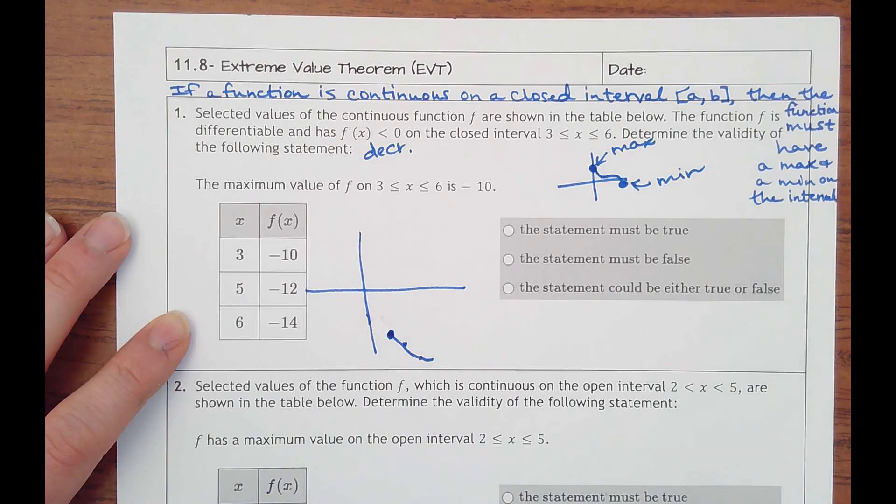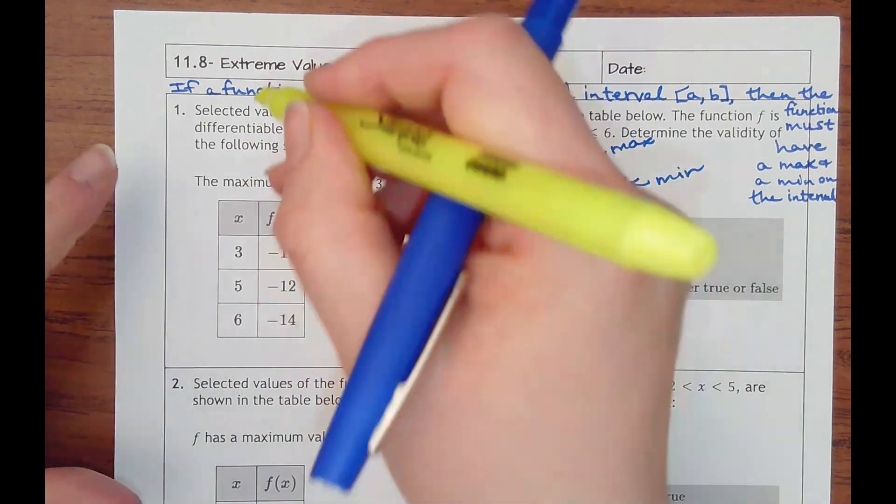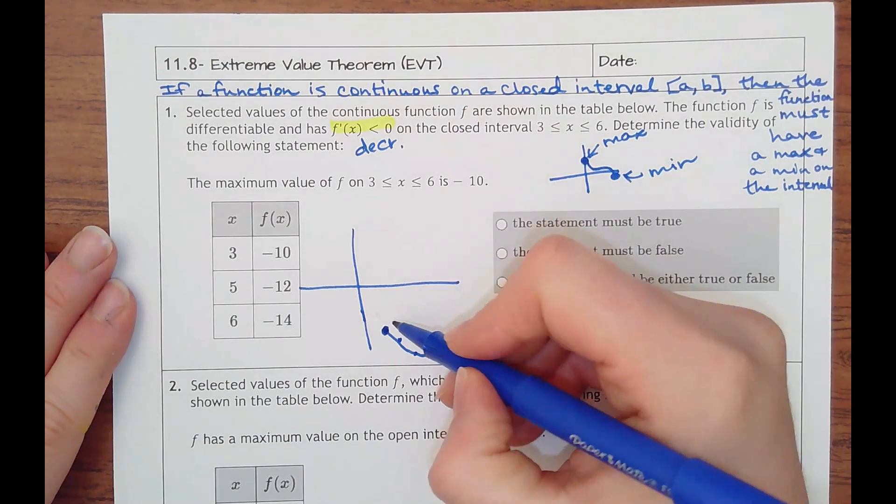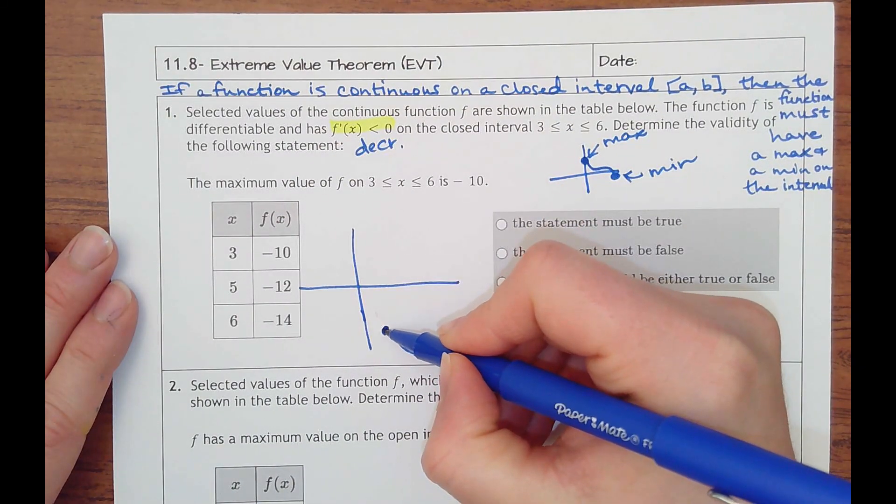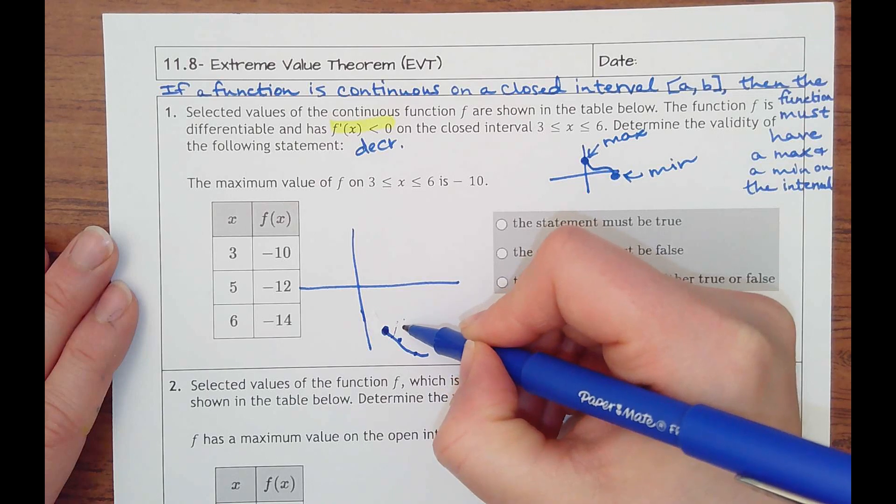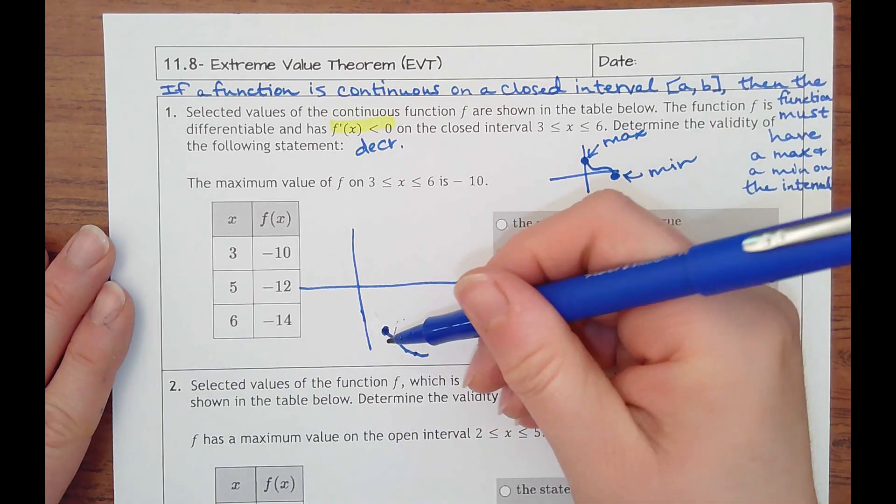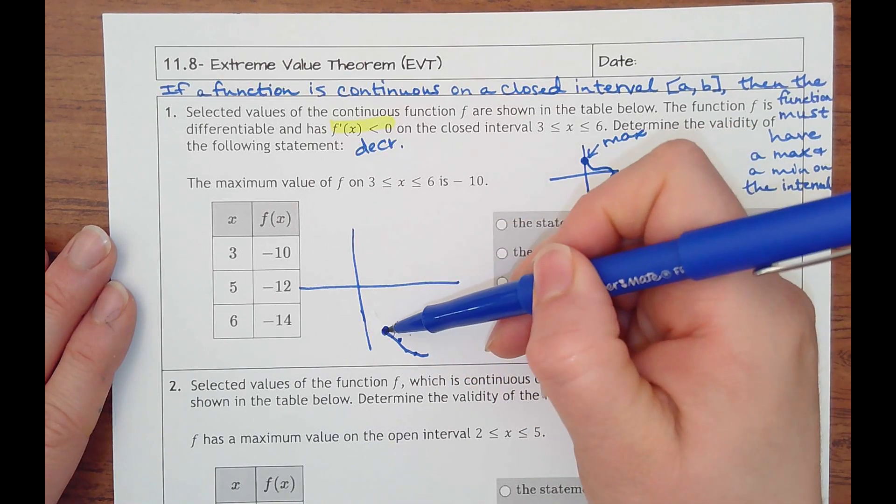If it didn't have this important piece of information that the slope is always decreasing, I wouldn't know if this point really is the max. I could have this function go up and back down and have different hills in between.